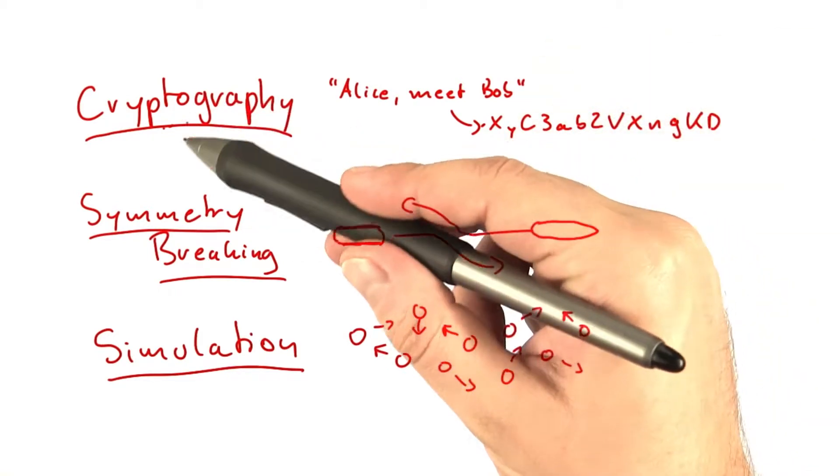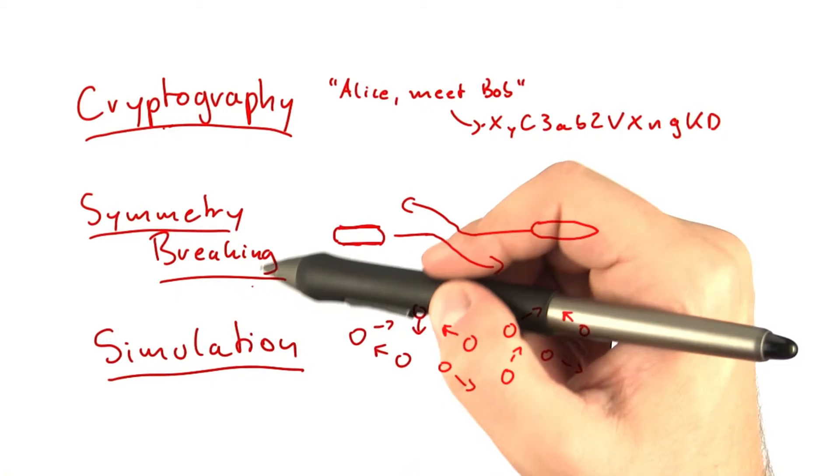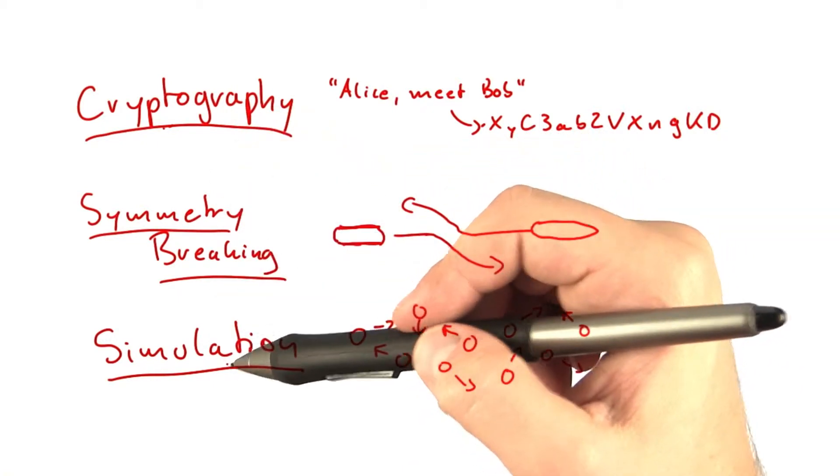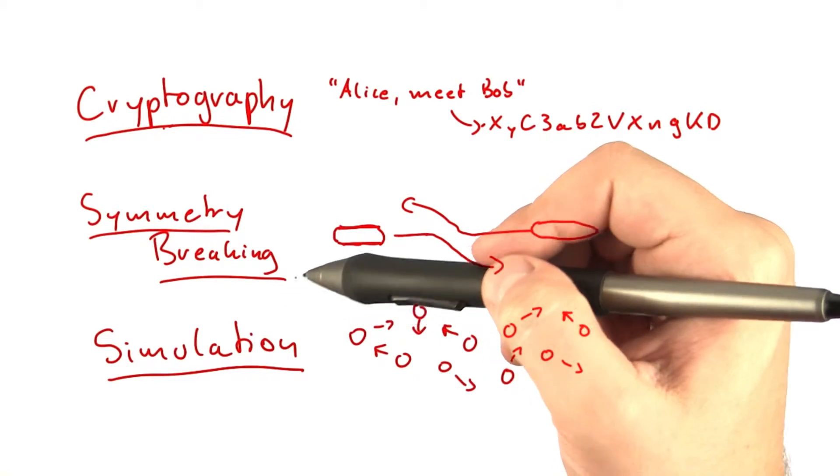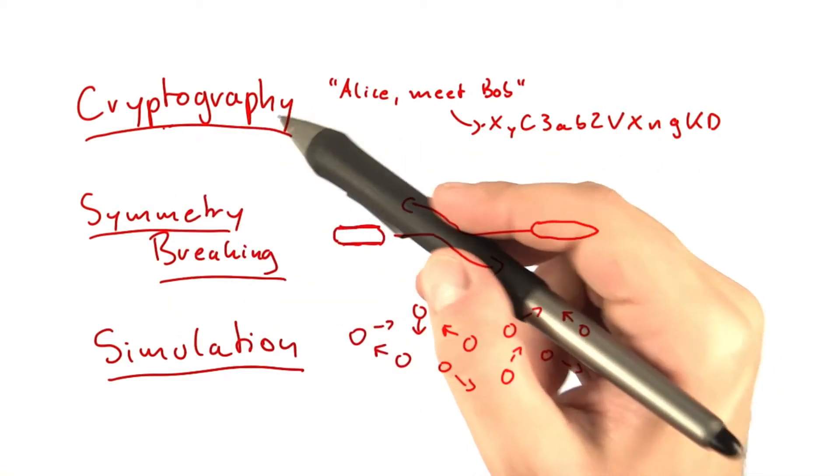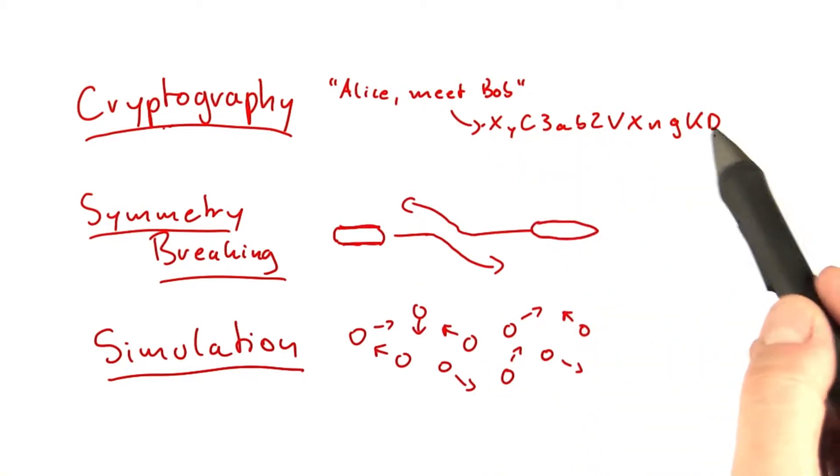Now the difficulty with using randomness to solve NP-complete problems is this. In all of these examples here, being as random as possible is something rather desirable. So in cryptography you want perfect randomness because that gives you the most security.